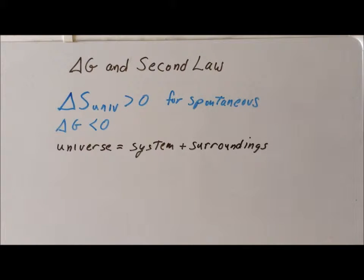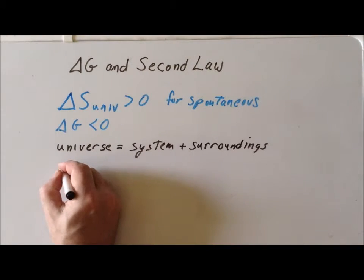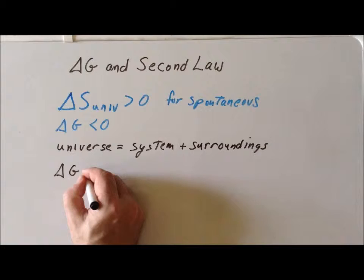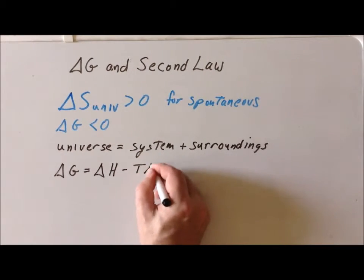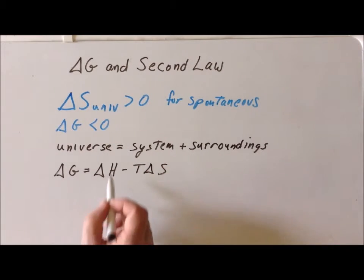So, what is delta G? Well, recall that by definition, delta G is equal to delta H minus T delta S, where delta H is the enthalpy, T is the temperature, and delta S is the entropy.